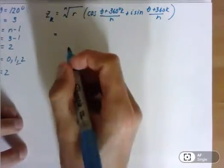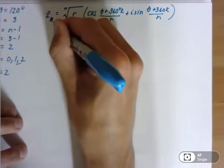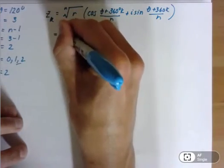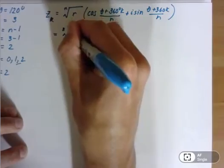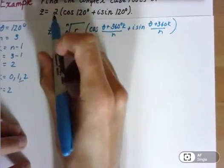So let's look at z sub k in general. n is 3, so we're going to have the cube root of the r value, which is 2. We get 2 from here.